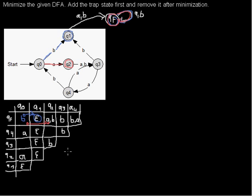I changed something in the last pass through the table. But I've done it enough times to see that when I look into those remaining cells, they always refer back to each other. So I will not find any proof that those states are not equivalent. That means Q2 is equivalent to Q4, and Q3 is equivalent to Q0.